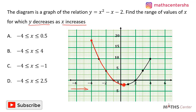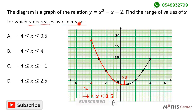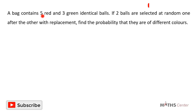We need to get the x-coordinates of these two points. The x-coordinate of the starting point is negative 4, and the x-coordinate of the turning point traced to the x-axis is 0.5. So between negative 4 and 0.5, as x increases, y decreases. The correct option is: x is greater than or equal to negative 4 but less than or equal to 0.5.